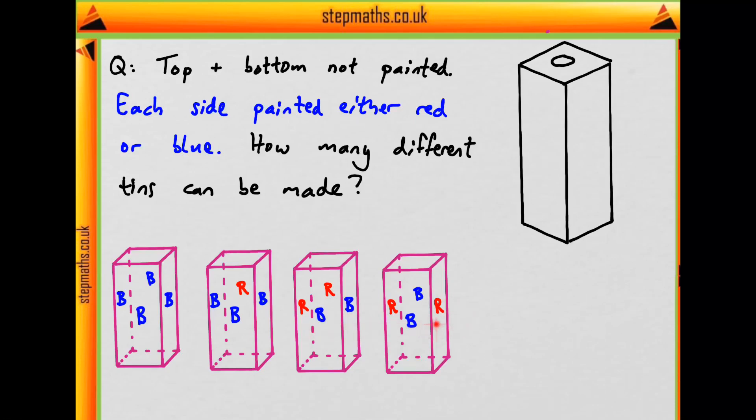So what next? We could add one more red side to have three reds and one blue. We know there's only one way of having three of one color and one of a different color. Then what's our final tin? We could have all of the sides red.